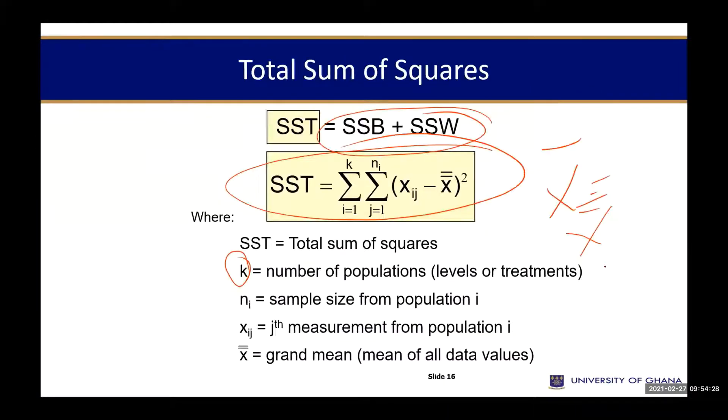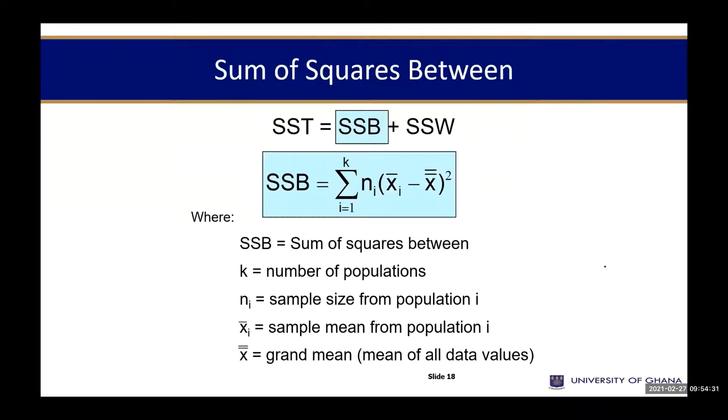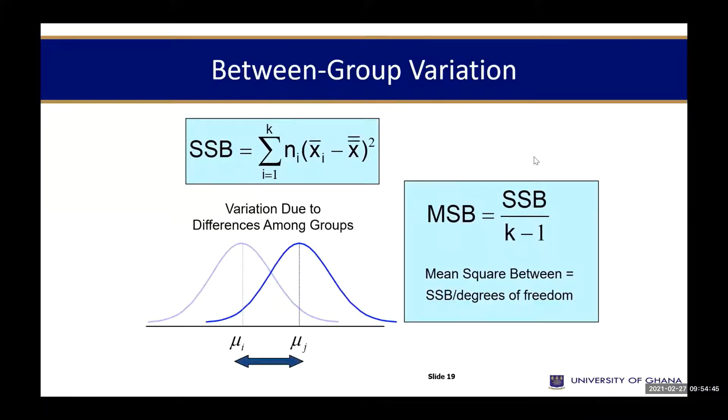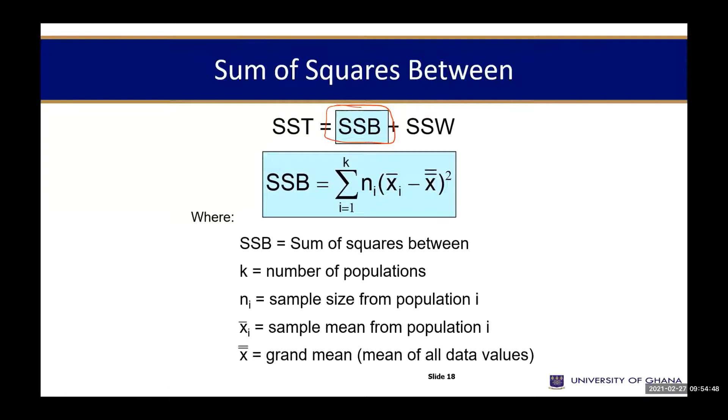I need to examine how do I calculate my SSB, that is the sum of square between mean. I'm explaining this because ANOVA is easy, just that the computation will take you, you apply a lot of information to compute that. Remember we said SST is equal to SSB plus SSW. What is SSB? The sum of square between the variance.